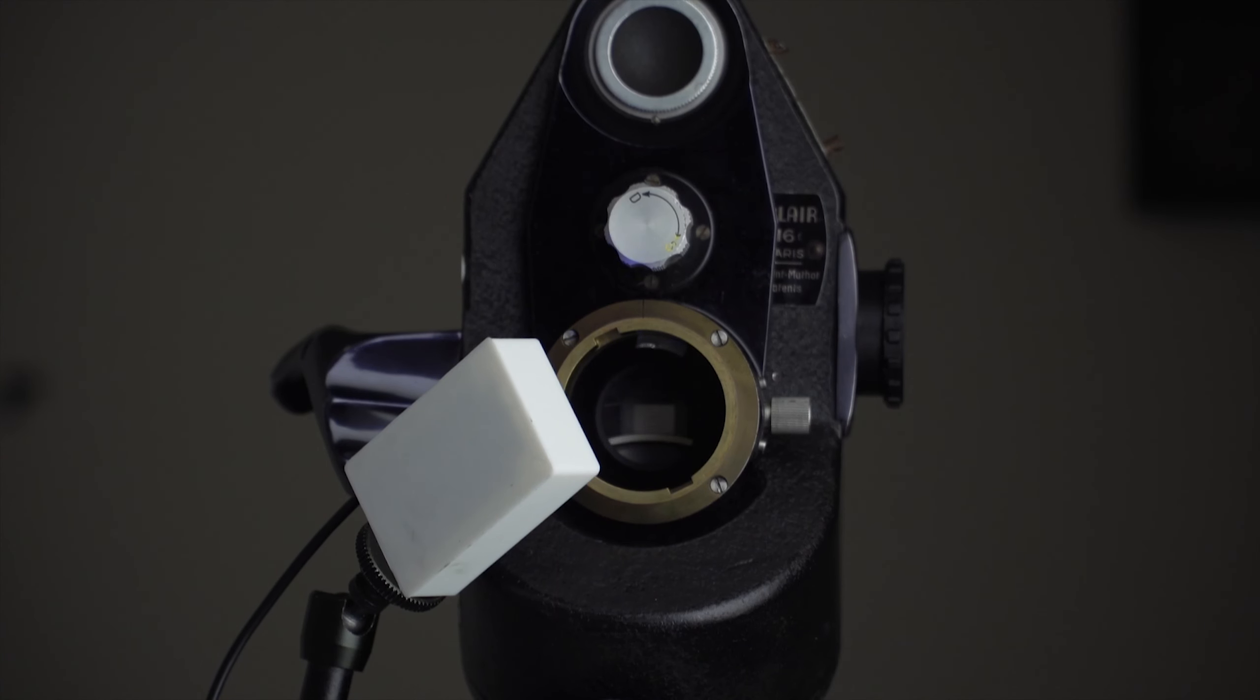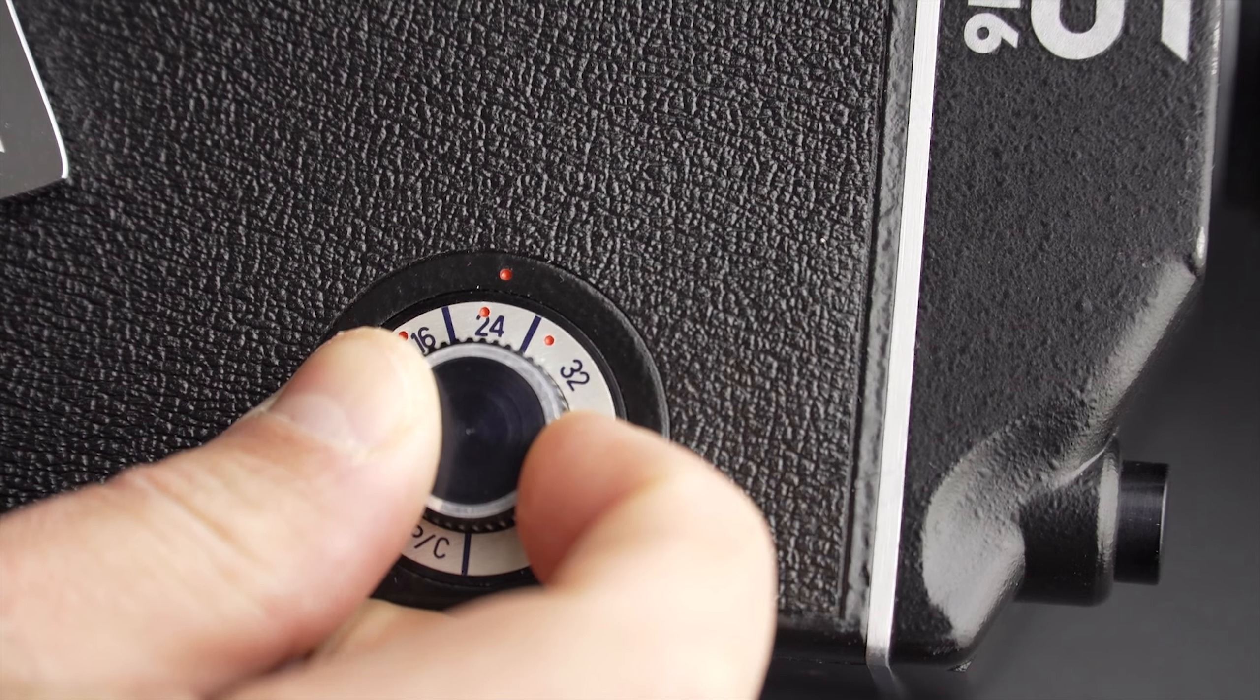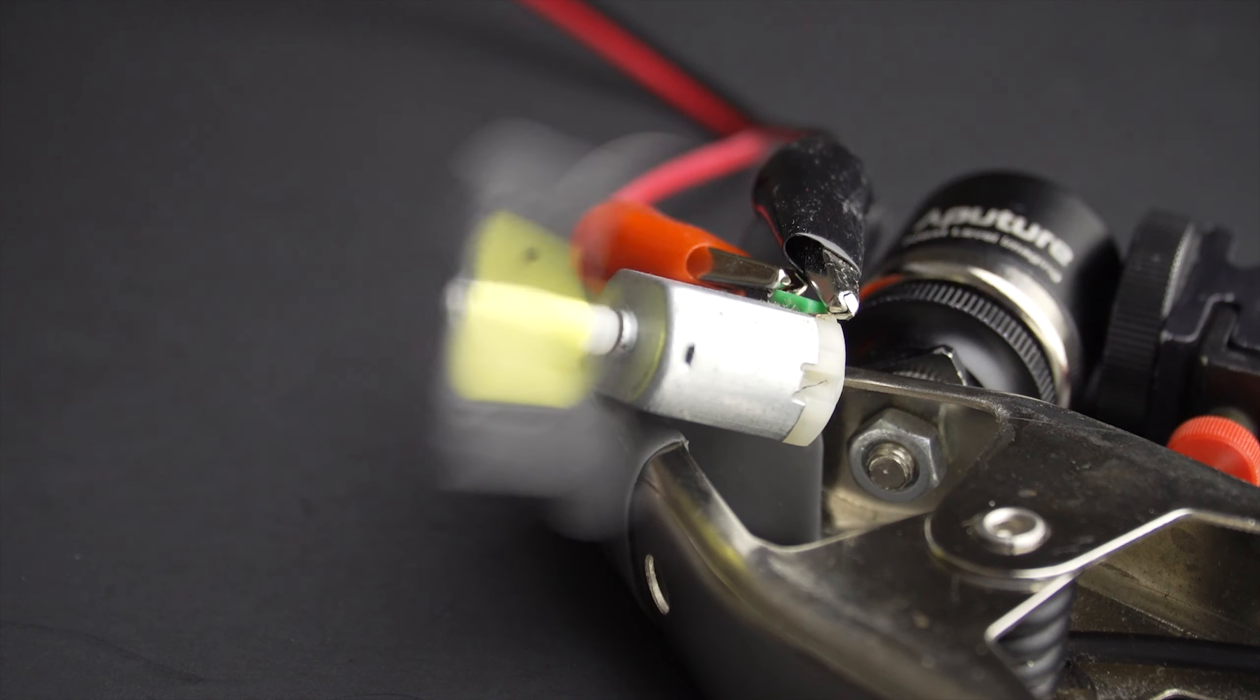Okay, so now we know that a stroboscope can help us prove a camera is running at exactly 24 frames per second. But I said I was going to help people who don't have a crystal sync camera to find a spot where their camera runs more closely at 24 or any given speed.